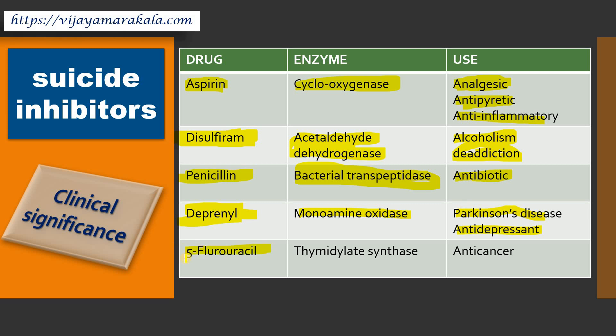5-fluorouracil is an anti-cancer drug that inhibits thymidylate synthase, which is an important enzyme for the biosynthesis of thymine and uracil. If this enzyme is inhibited, there is no cell division, so we can arrest excessive cell division in cancerous tissues. These are a few examples of suicide inhibitors.